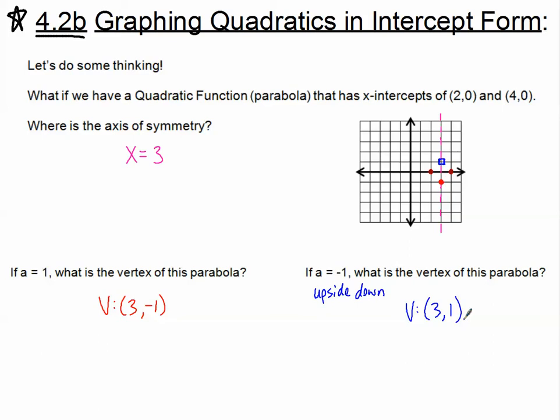The point of these three warm-up questions is: for intercept form, I'm going to give you the two x-intercepts of your parabola. You need to find the midpoint of that distance to find your axis of symmetry, which gives us the x-coordinate of our vertex. Then we plug that in to find the y-coordinate of our vertex.